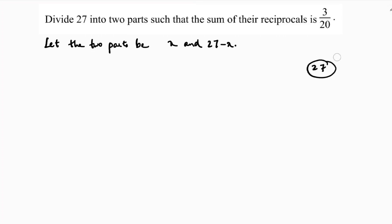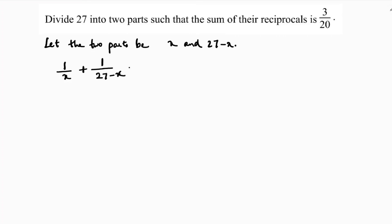I'm considering the two parts as x and 27 minus x. The given condition is that the sum of their reciprocals is 3 by 20. So the reciprocal of x is 1 by x, and the reciprocal of 27 minus x is 1 by 27 minus x, and their sum equals 3 by 20.